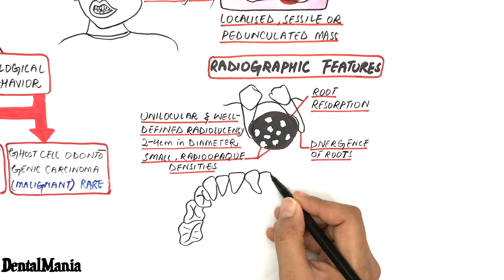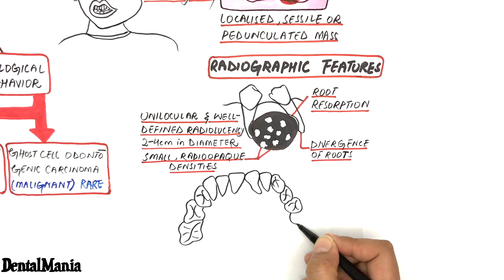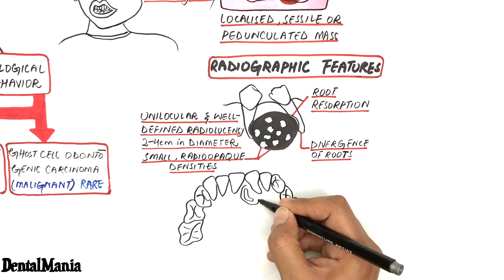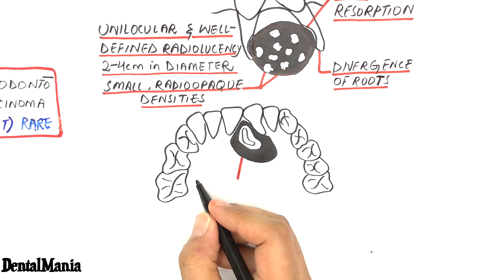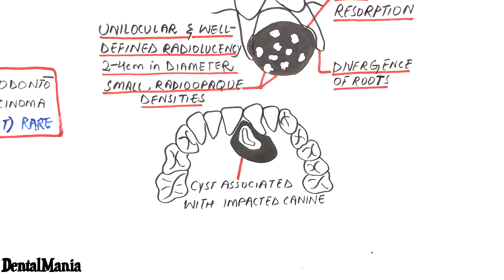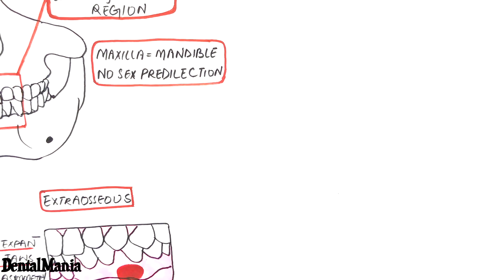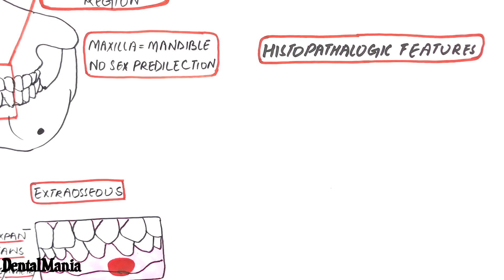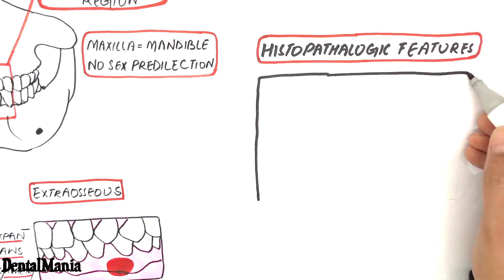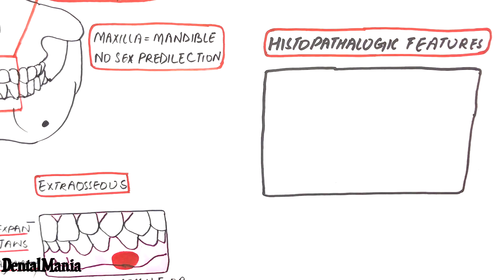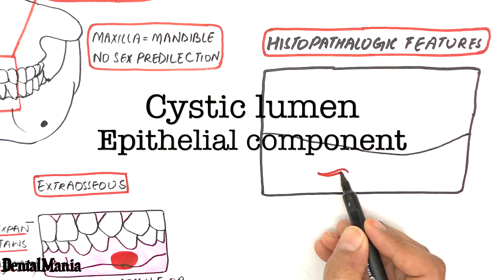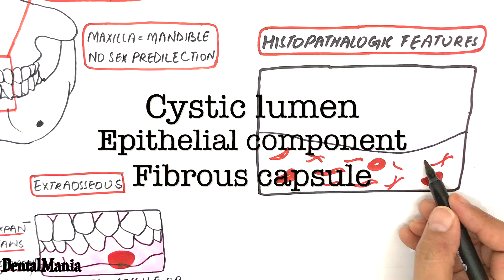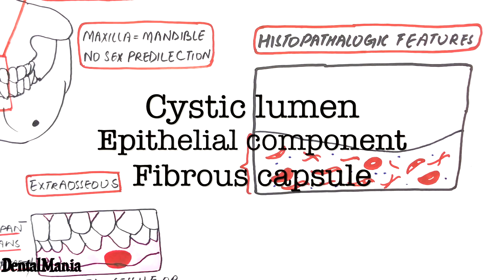In about one-third of all cases, the cysts are associated with an unerupted tooth, which is mostly a canine. In a histopathologic section, the cyst possesses three parts: a cystic lumen, an epithelial component, and a connective tissue component or fibrous capsule.